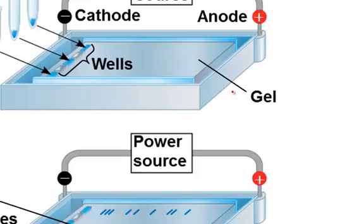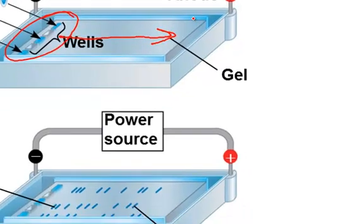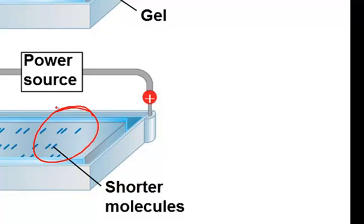Gel electrophoresis uses a jello-like gel with a power source attached. DNA fragments are added to separate wells at one end, and an electric current is sent through the gel. DNA has negatively charged phosphate groups, and so the DNA moves towards the positive electrode. Smaller fragments move farther through the gel than larger fragments do.